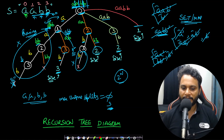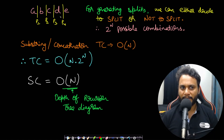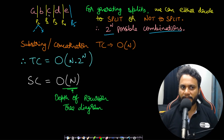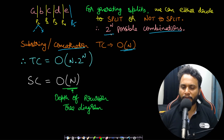This flow covers doing partition at all possible characters, giving 2 to the power of n total combinations. For example, with characters A, B, C, D, E — each character can be a partition point with two choices, hence 2^n combinations. Since generating each substring takes O(n) time, the total time complexity is O(n × 2^n).